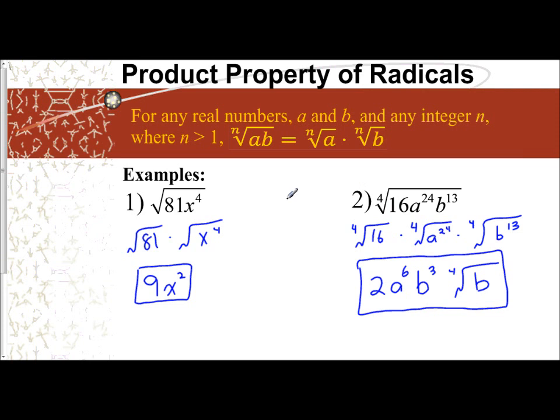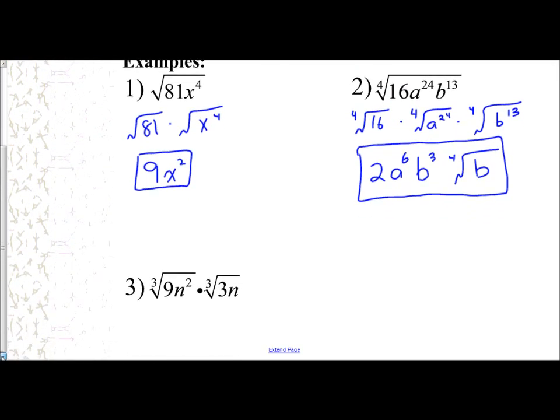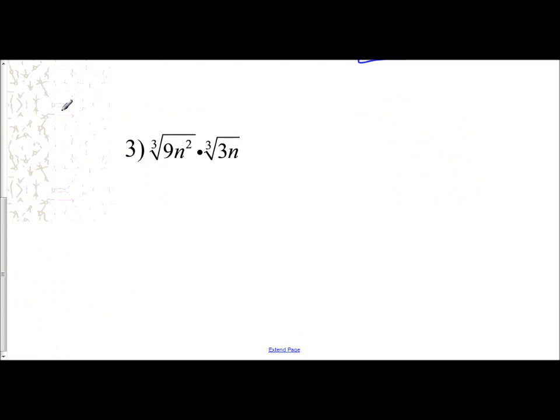And so in these two examples, we split apart across the root. But if we look at example number 3, we'll see that we can actually merge together as well. So they're already split apart, but I notice I can't simplify. The cube root of 9 doesn't work, cube root of n squared doesn't work, cube root of 3 can't simplify, cube root of n can't simplify. But I notice I'm multiplying the two radicals together.